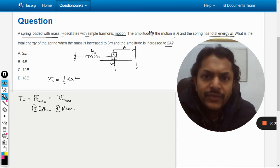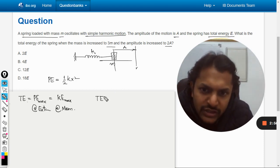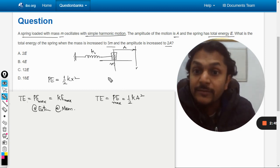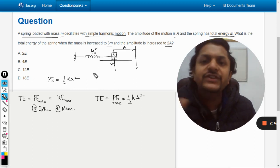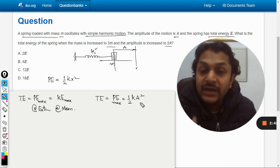So if the amplitude is A, I can always say that the total energy, that is the maximum potential energy at the extreme position, will be (1/2)kA². k is a spring constant which will remain constant throughout. So it only depends upon the amplitude and not on the mass.